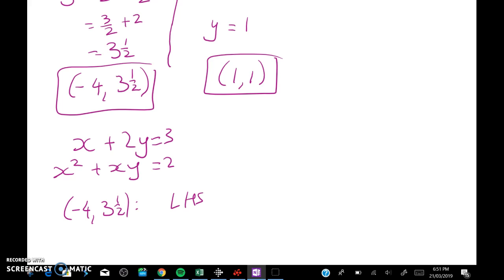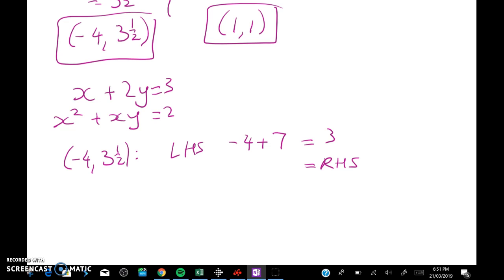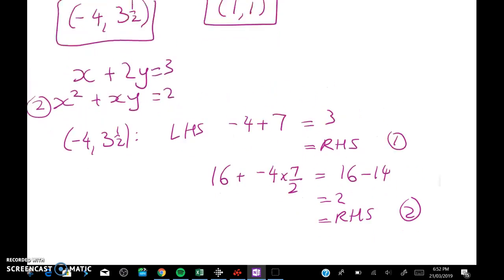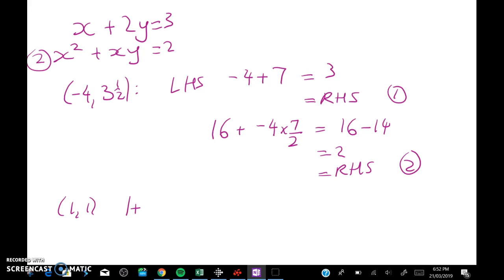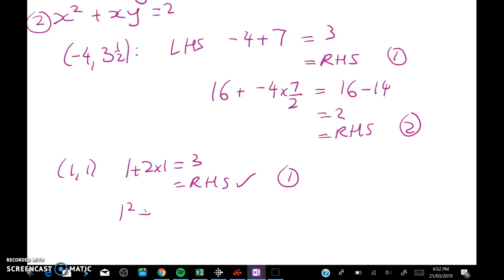So we've got x plus 2y equals 3 and x squared plus xy equals 2. So let's check first on negative 4 and 3 and a half. Well we've got negative 4 plus 7. What's that equal to? That equals 3 which is my right hand side. And the second equation is the one that I use to work it out so we know that one's going to be satisfied. But let's check anyway. We've got 16 plus negative 4 times 7 over 2 which gives me 16 minus 14 which is 2 which is the right hand side of 2. So that's that point checked. And we can now check 1, 1. So 1 plus 2 times 1 is equal to 3 which is the right hand side. So we've checked equation 1 and then we get 1 squared plus 1 times 1 is equal to 1 plus 1 which is 2 which is the right hand side. So equation 2 works. So both of those solutions hold.